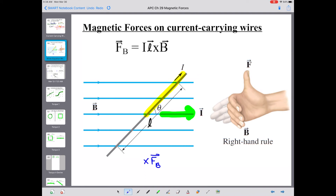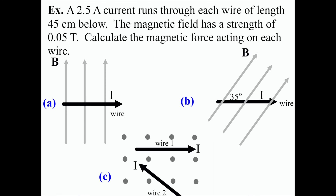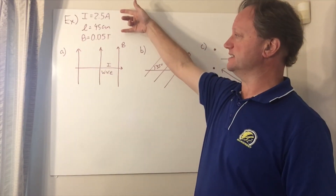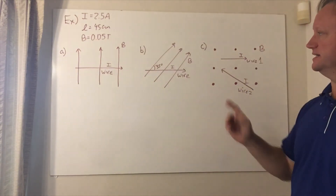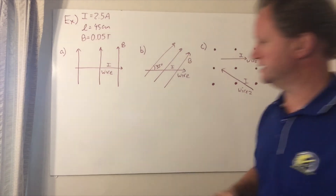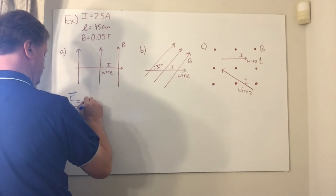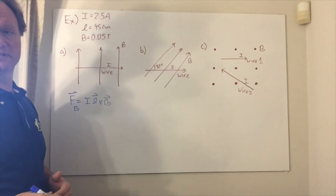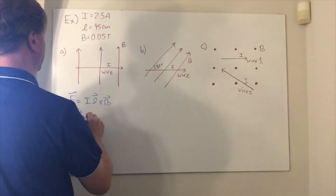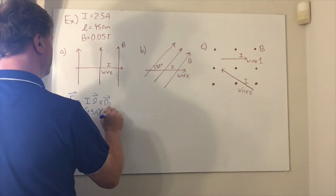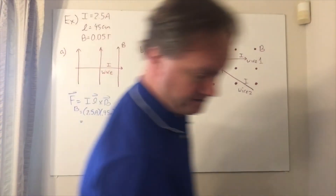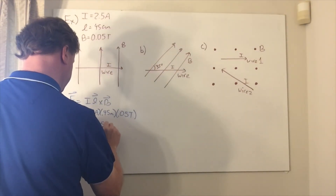Now let's look at a specific example on F equals IL cross B getting into directions on the right-hand rule. We've got three different diagrams with values for I, L, and B given, and we want to calculate the force on the wire in each scenario. For part A: I = 2.5 amps, length = 0.45 meters, B = 0.05 teslas, giving a value of 0.0056 newtons.